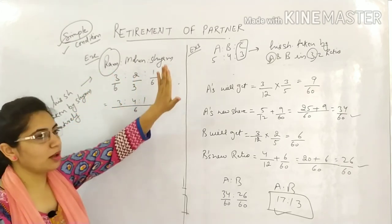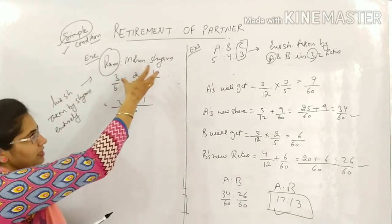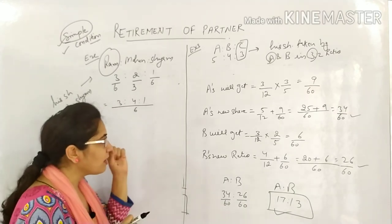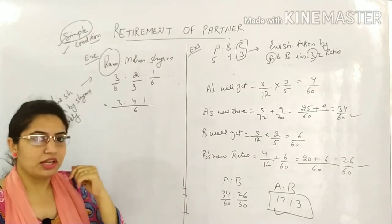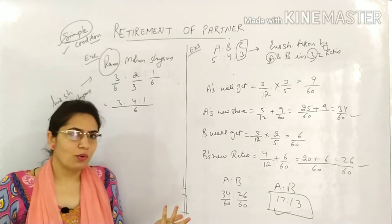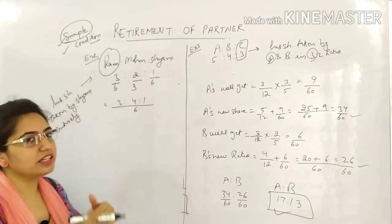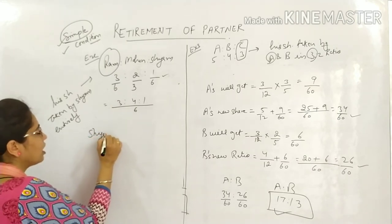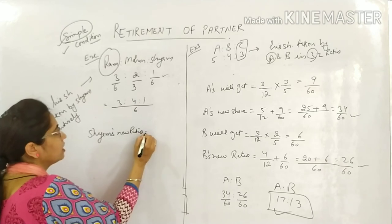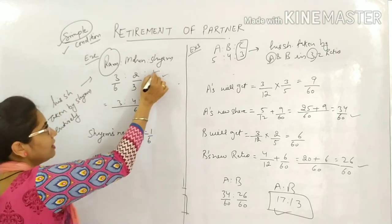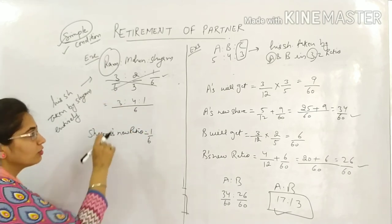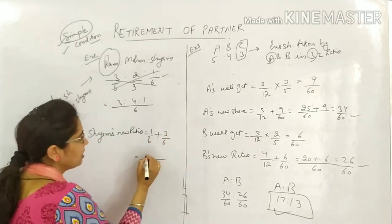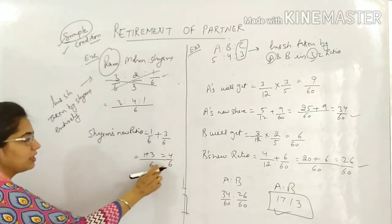Entirely means Shyam gets the complete share of Mohan. This means Ram and Shyam were close, so Mohan gave his entire share to Shyam on retirement. Since Mohan gets nothing, his ratio doesn't change. Shyam's new ratio: old share was 1/6, plus Ram's share of 3/6. Adding with LCM = 6: 1+3 = 4/6.